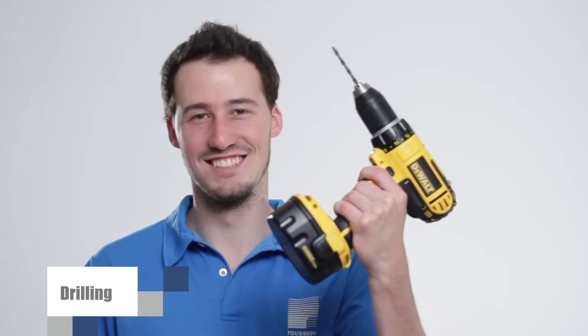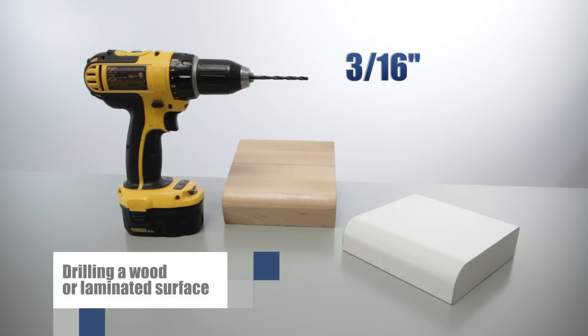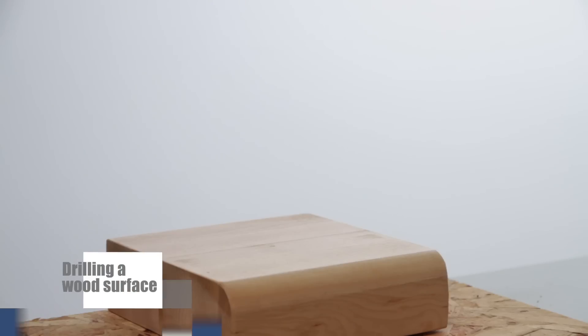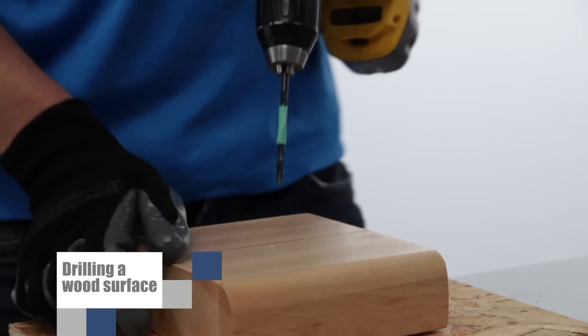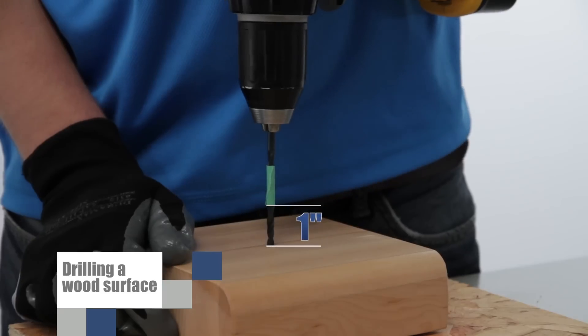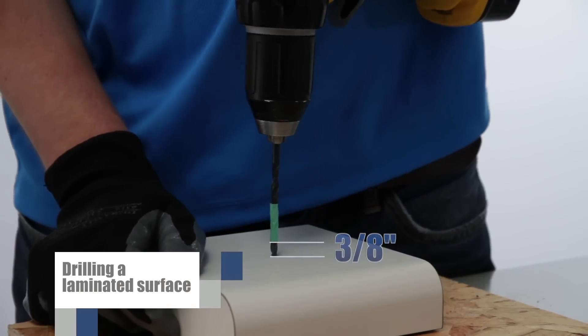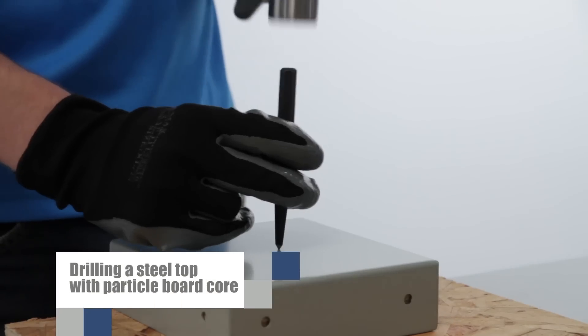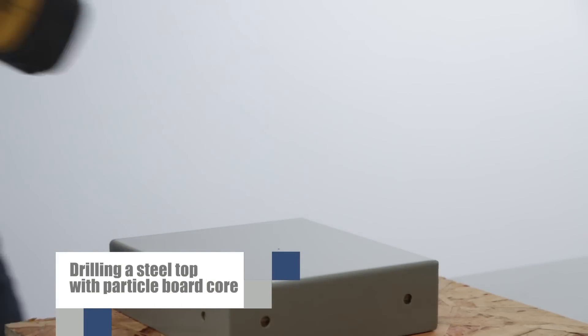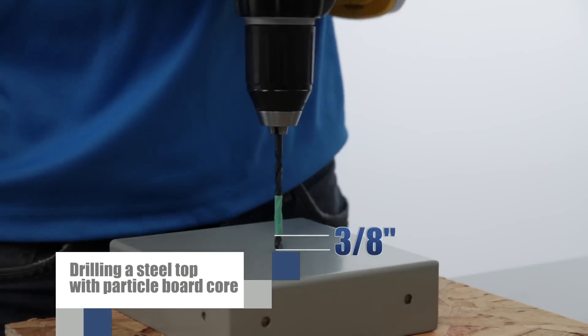You are now at the drilling step. For wood and plastic laminated tops, use a 3/16 inch drill bit. Drill a 1 inch deep hole for a wood top and a 3/8 inch deep hole for a plastic laminated top. For steel tops with a particle board core, drill a hole 3/8 inches deep.